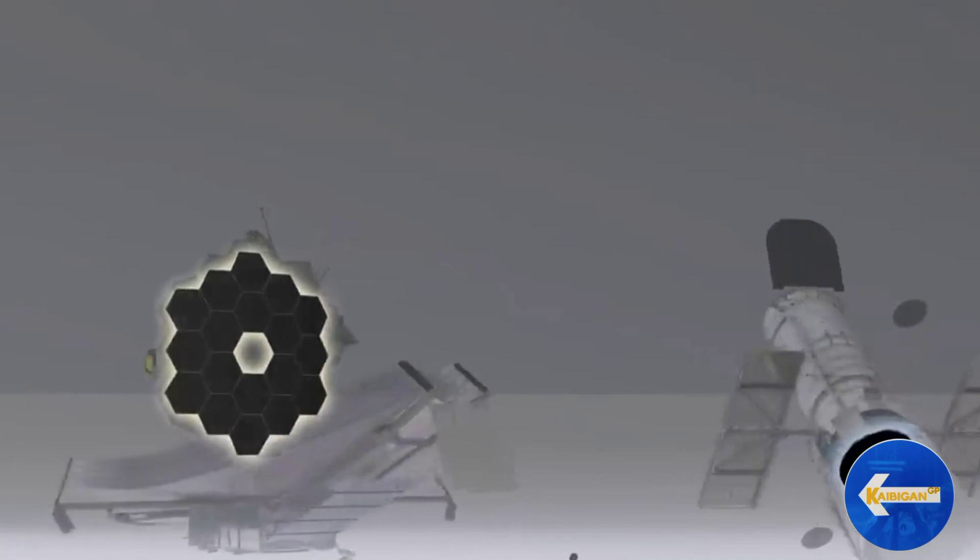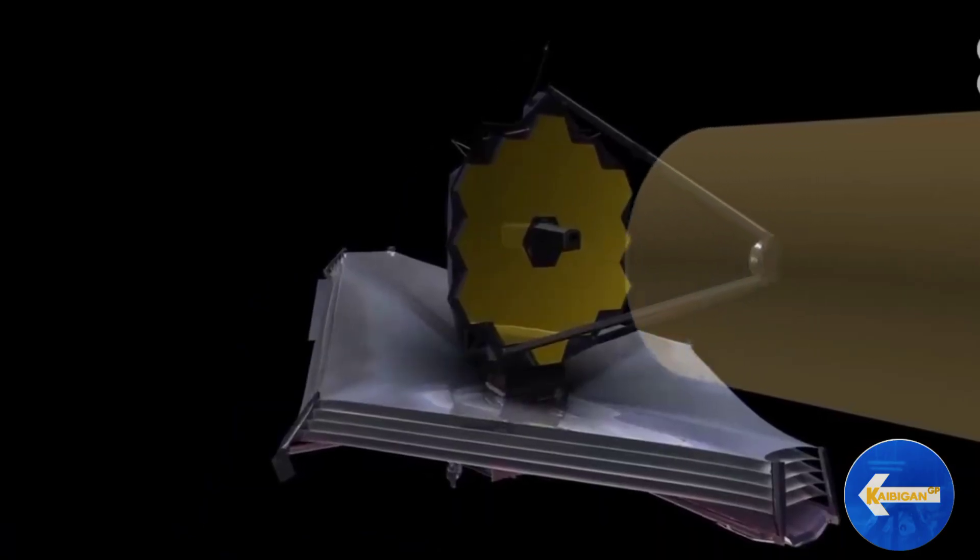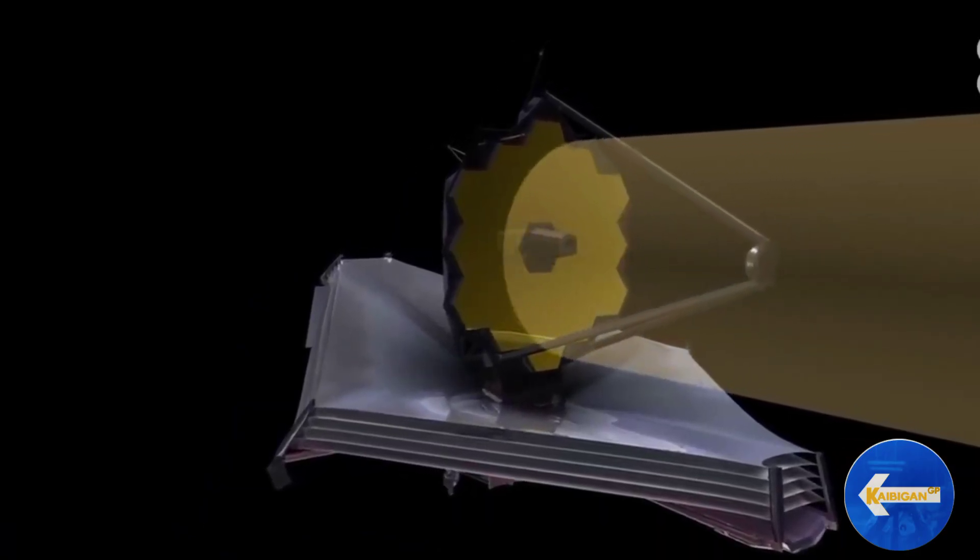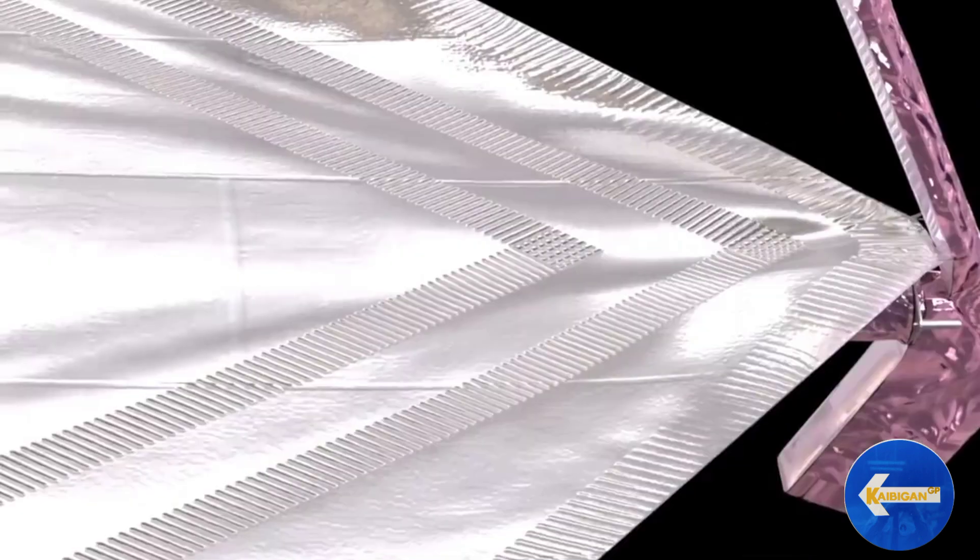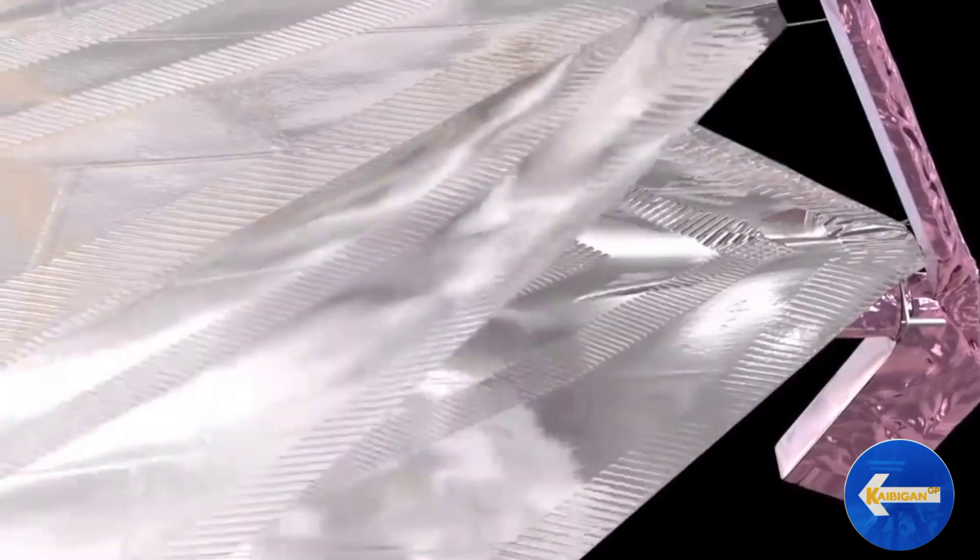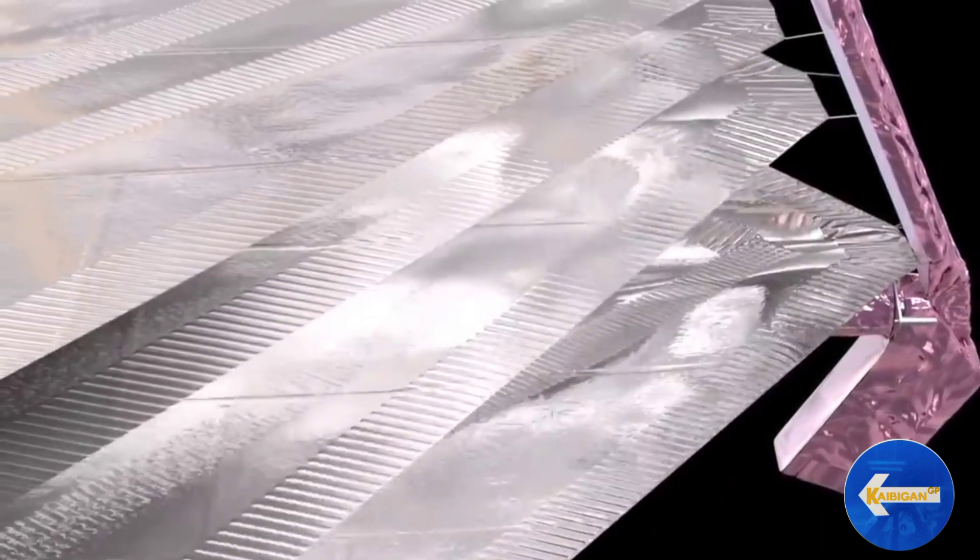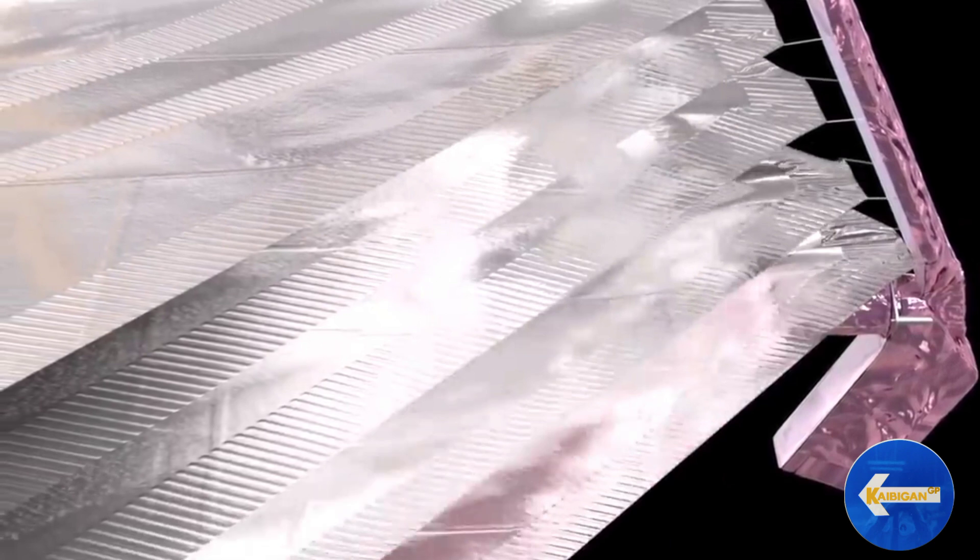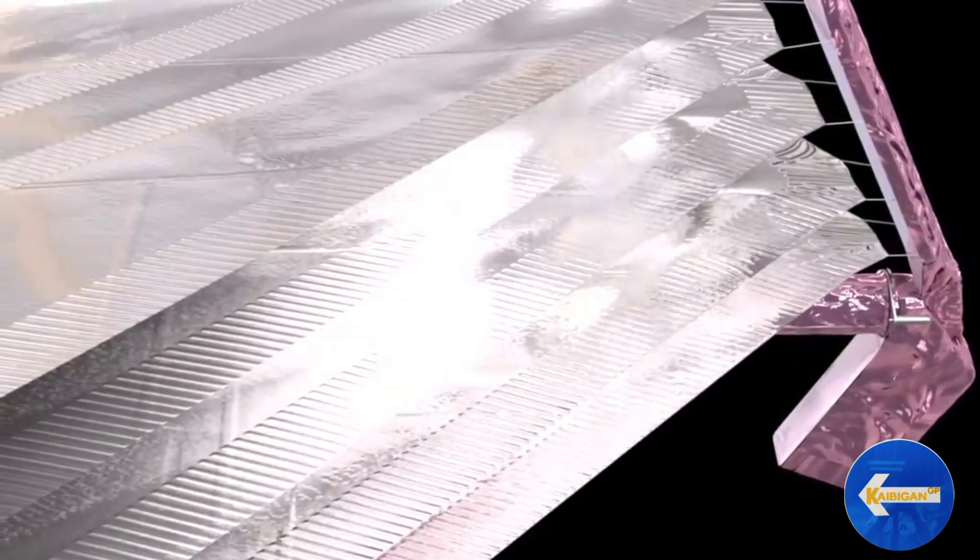At may sunshield ito upang harangin ang liwanag at init mula sa haraw, earth at buwan. Upang gawin ito ng shield, ay binubuo ng limang layer na naginsulit sa teleskopyo. Habang malaya pumapasok ang init na lumalabas sa pagitan na bawat layer.